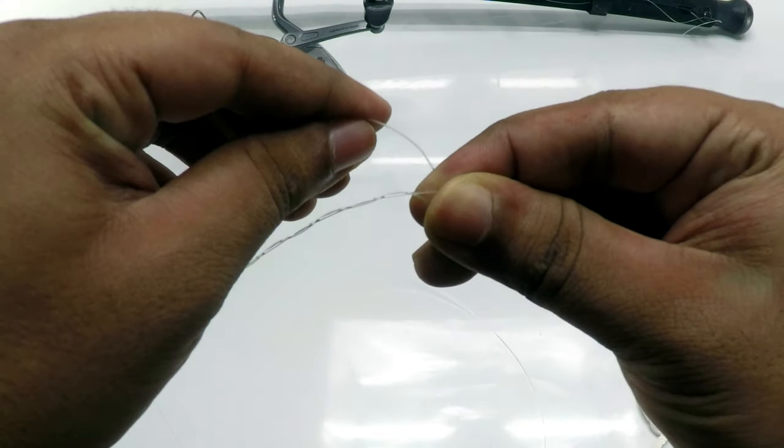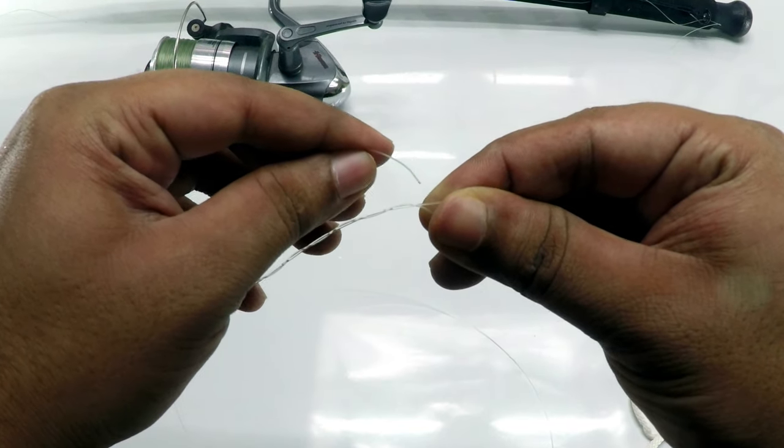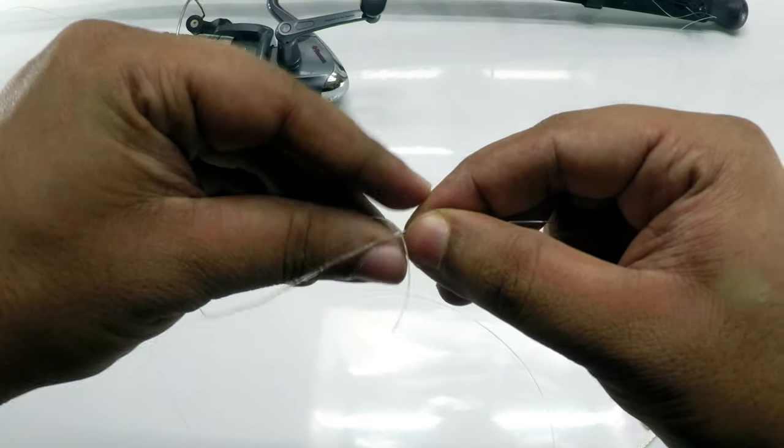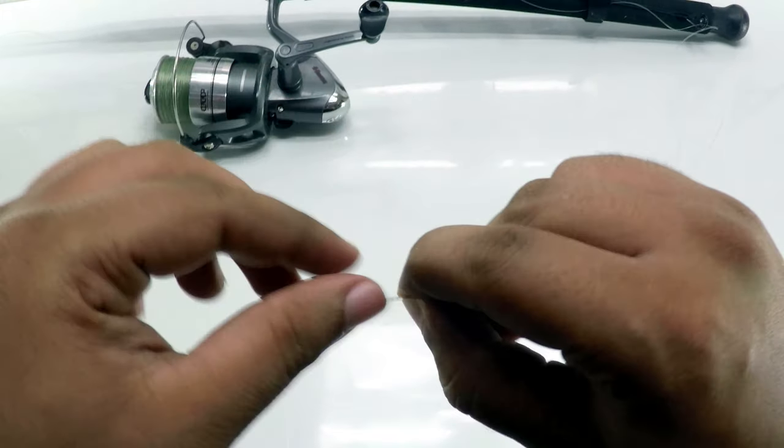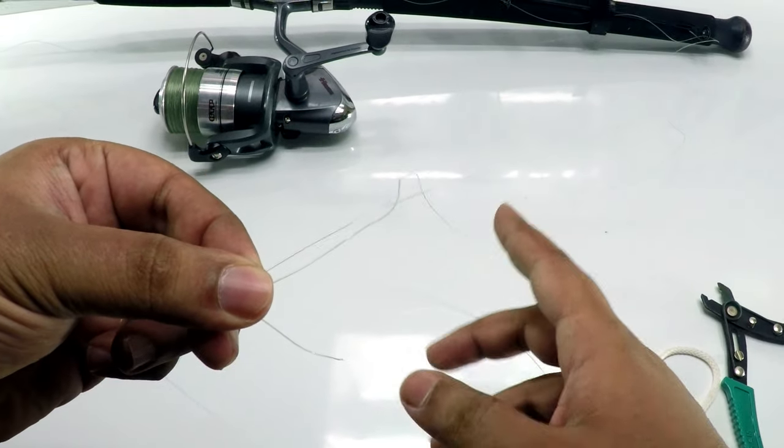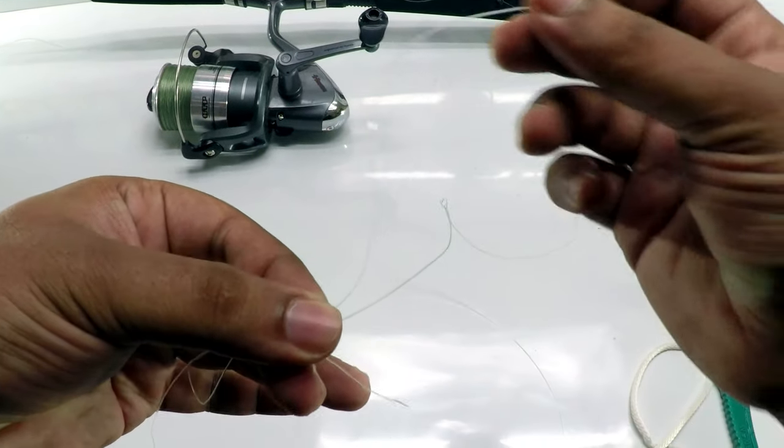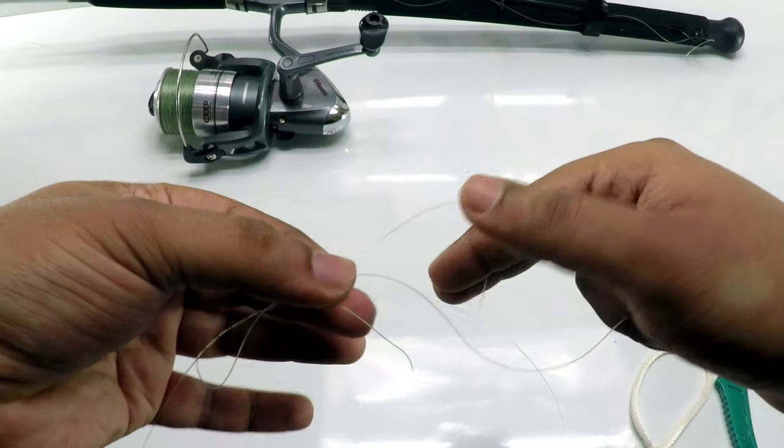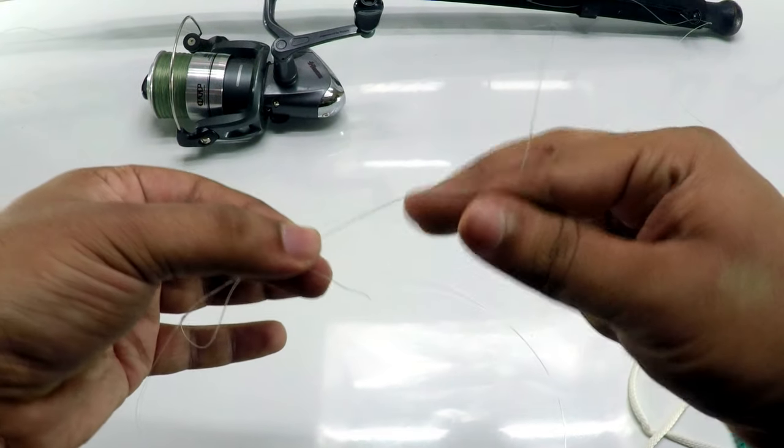Then pass it through the front hole. Once you've done that, leave this section of the line and hold the other part. You have to twist it in the other direction, not the same direction as before.